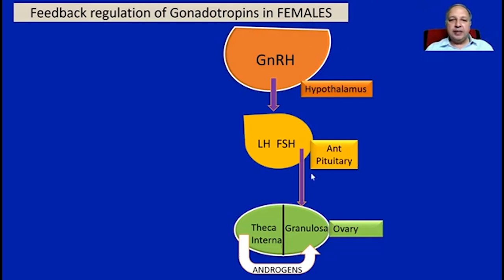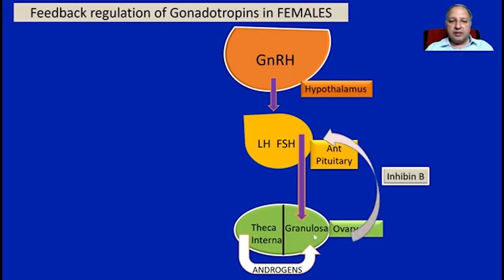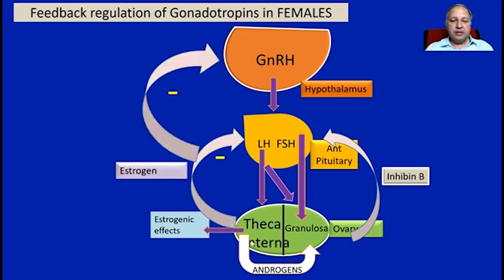In females, FSH stimulates the granulosa cells to produce inhibin B, again causing feedback inhibition. LH acts on both granulosa and theca interna cells, primarily on theca interna cells, to cause production of androgens, with estrogen being the main one. Estrogen causes inhibition both at the level of the anterior pituitary and the hypothalamus. In this way, gonadotropins via LH and FSH mediate their effects on reproductive function.